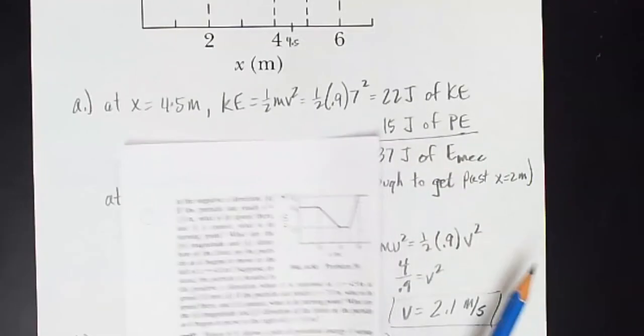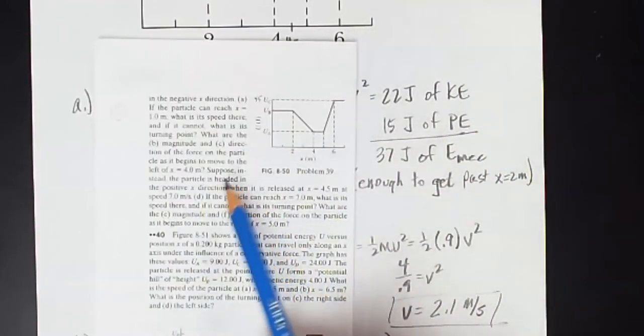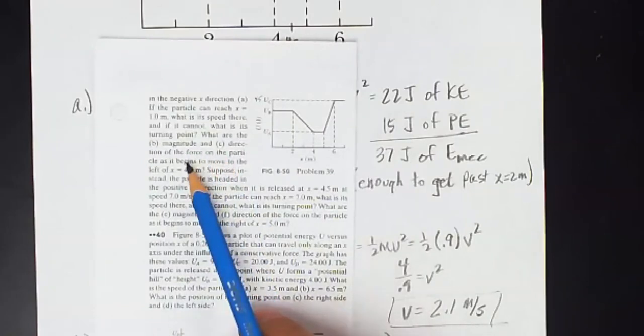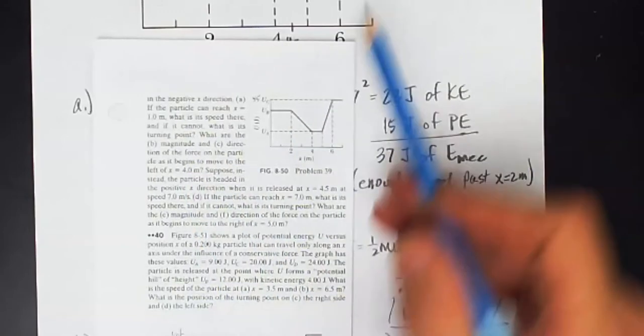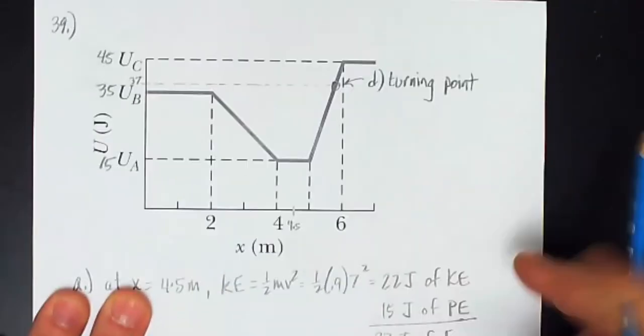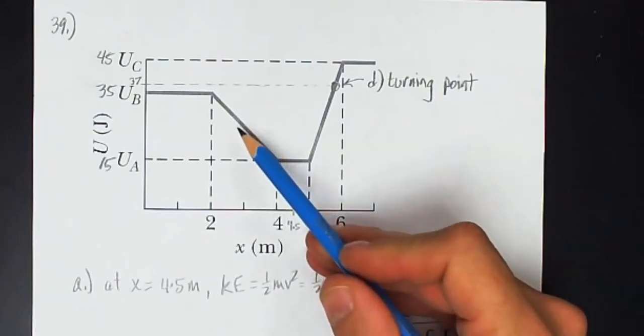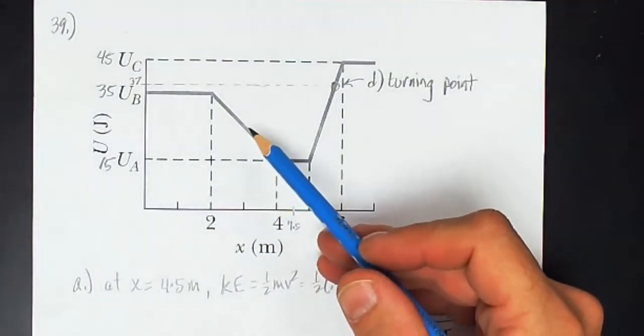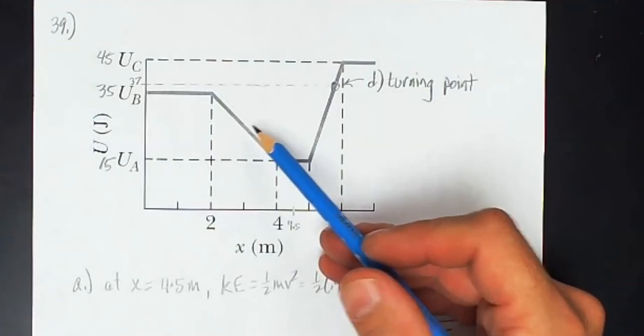Parts B and C. What are the magnitude and direction of the force on the particle as it begins to move to the left of x equals 4? So as it moves to the left of this point, in this region, what are the force and direction acting on the particle?